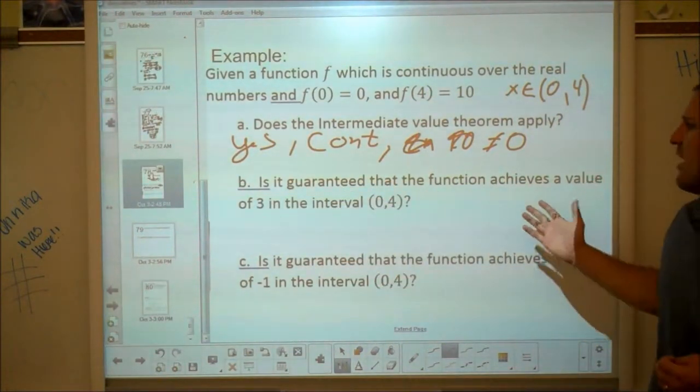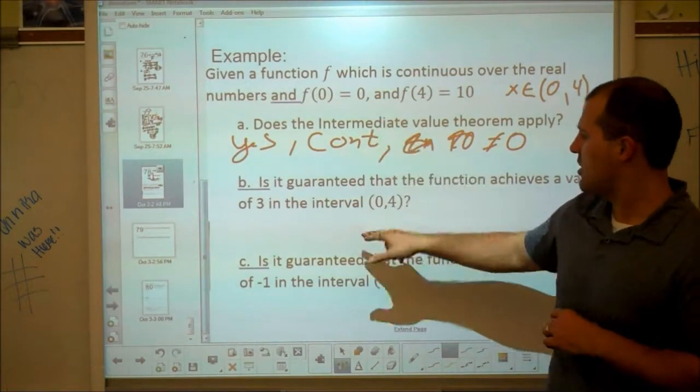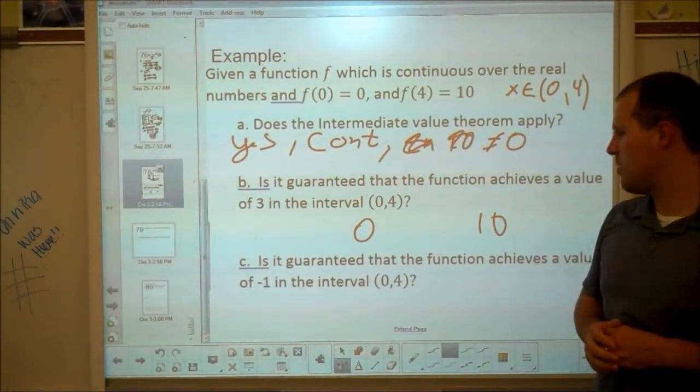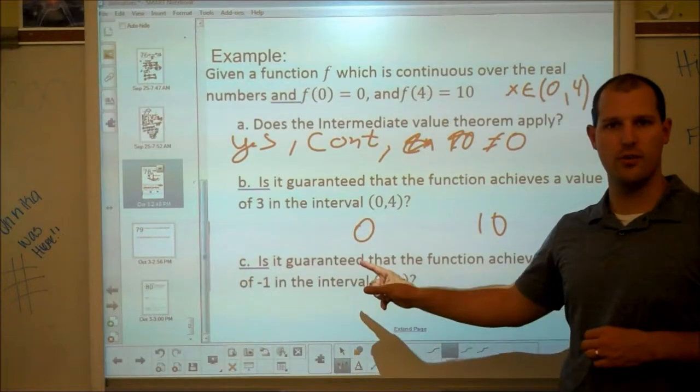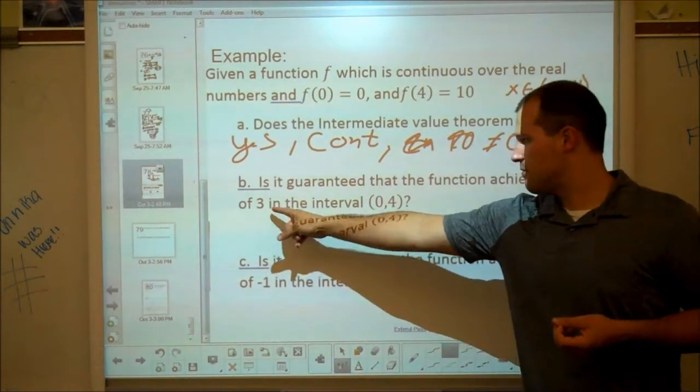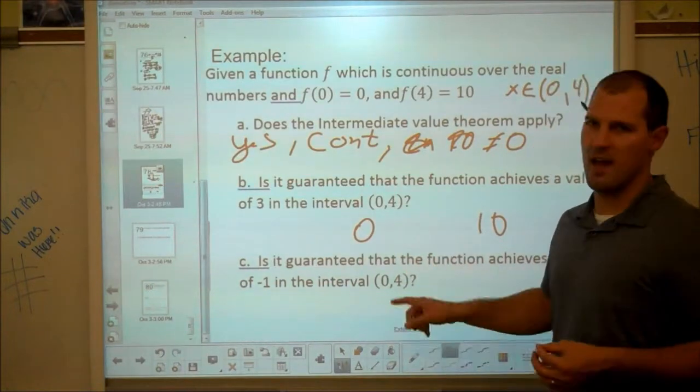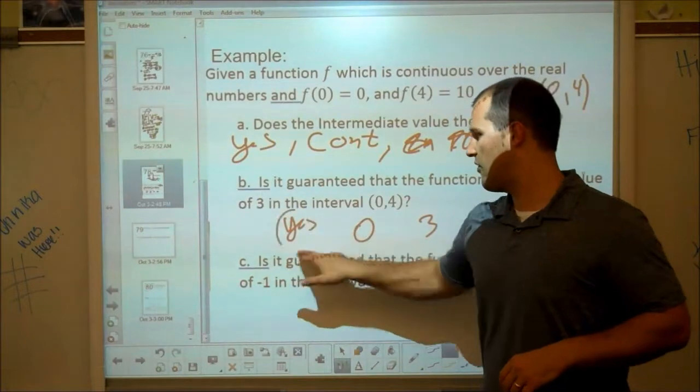Let's look at these next questions. Part B, is it guaranteed that the function is going to achieve a value of 3 in that interval? Well, let's see. It started at 0, ended up at 10. The intermediate value theorem guarantees that any number you name in between these two will be achieved. So yeah, it does. Do you know the x value where it's achieved? No, there's no way to know that. But we do know that 3 is in the middle of those. So absolutely, that's a yes.